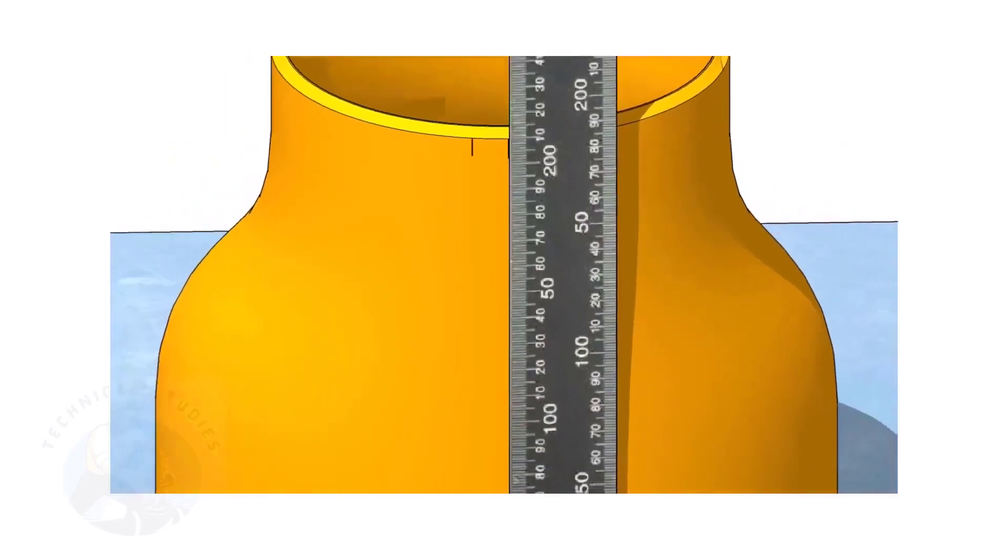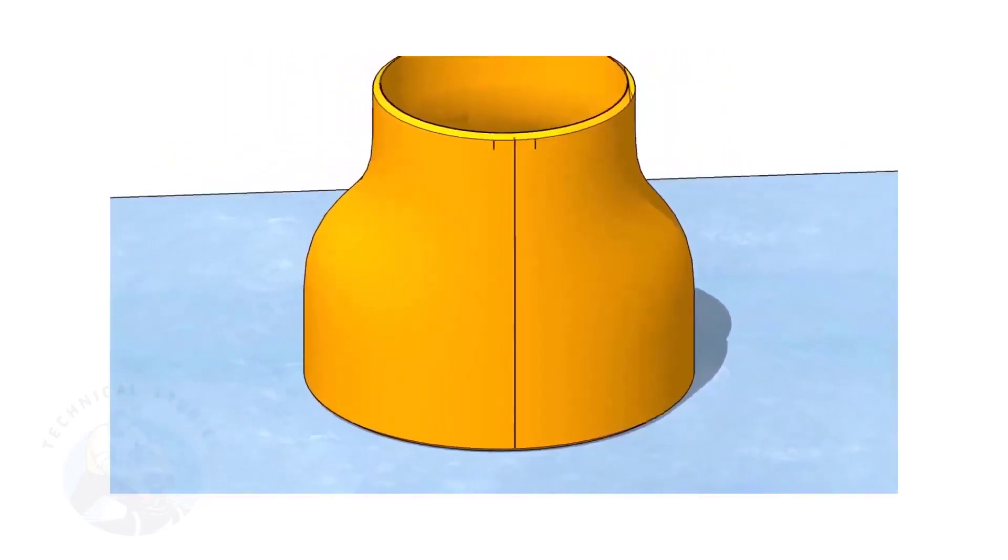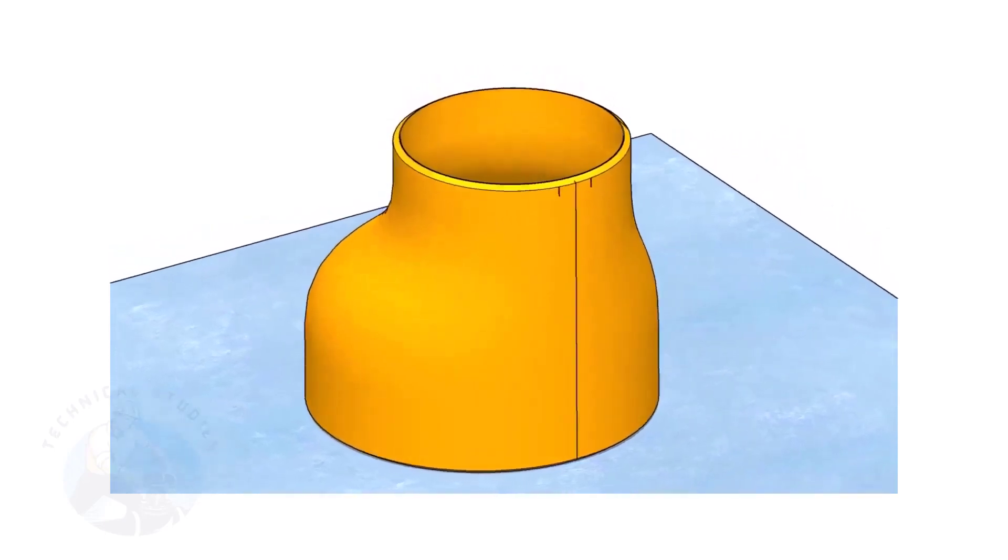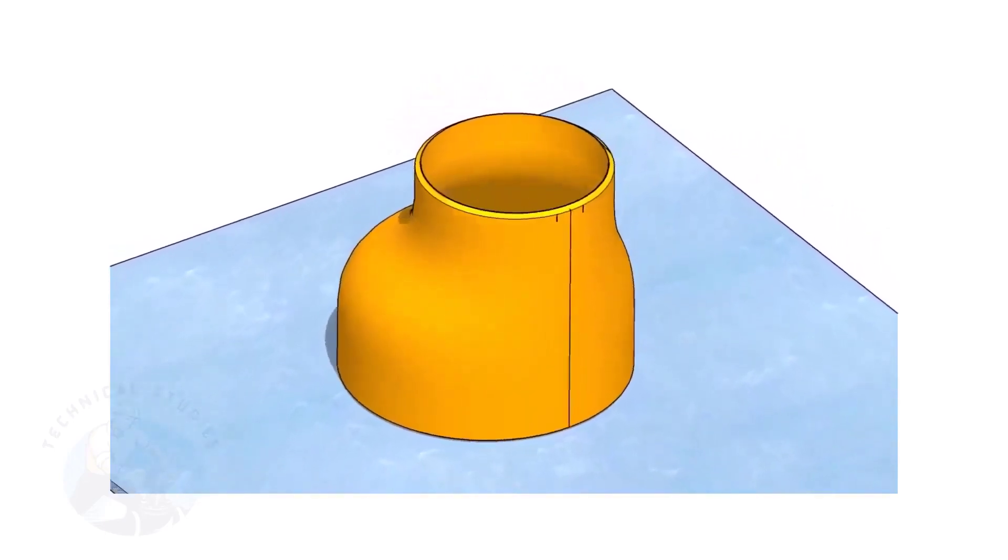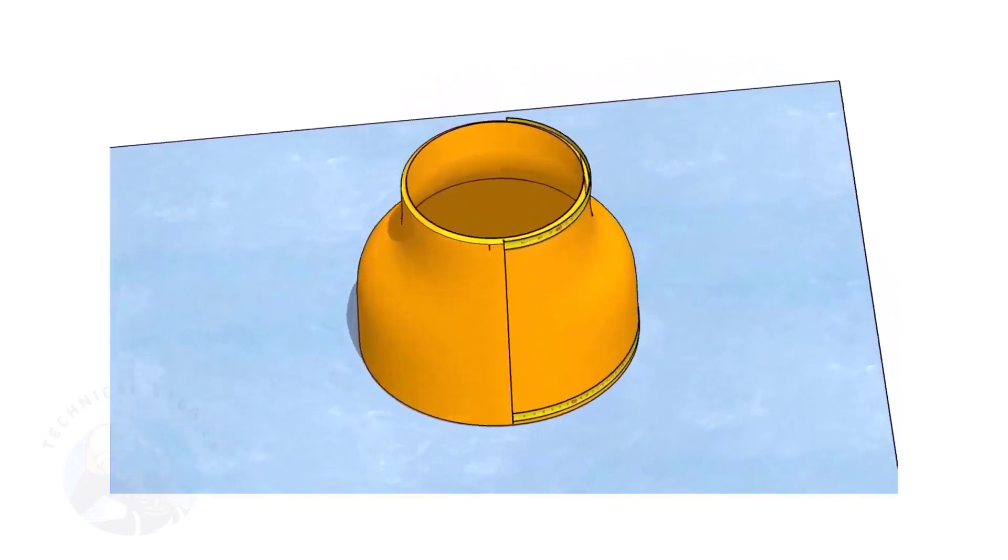In this video, I will show you the method of fitting an eccentric reducer to a pipe that is already fitted to a flange. But this method is applicable for all the fittings.